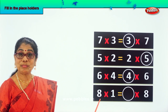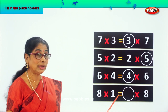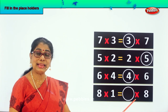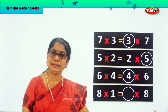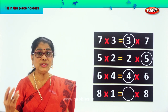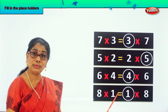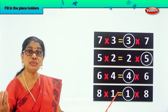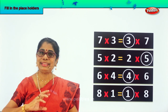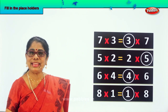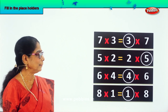Look at the last one. 8 into 1. 8 into 1 is 8. It is also equal to dash into 8. What could be the number that will give you the answer 8? 1. Yes, 1. So 8 into 1 is also equal to 1 into 8. Now, did we get the filling in placeholders correctly?